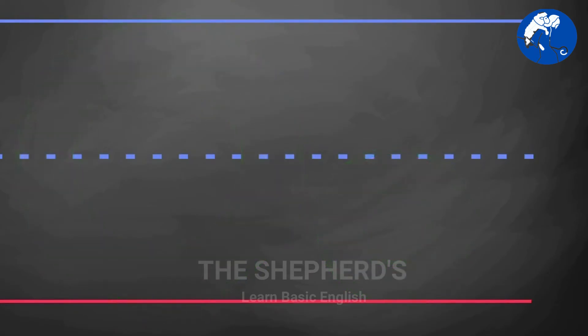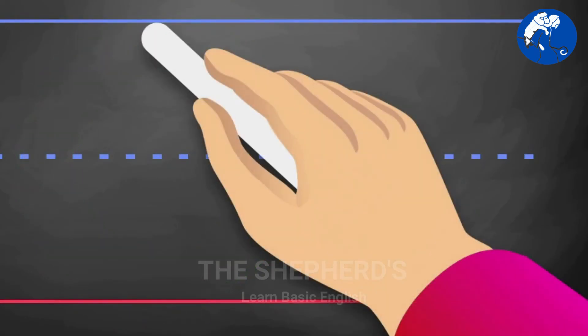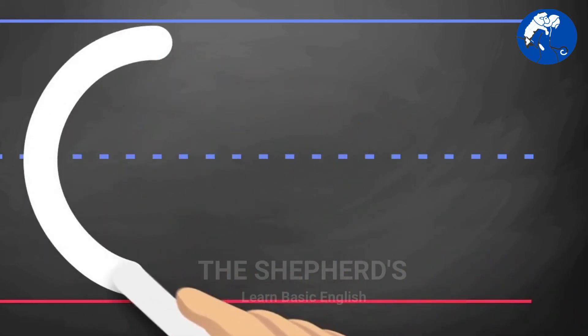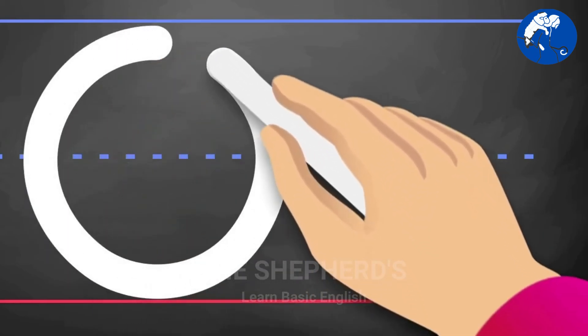Uppercase O: Start from the middle, pull back, turn, around, up, and close.